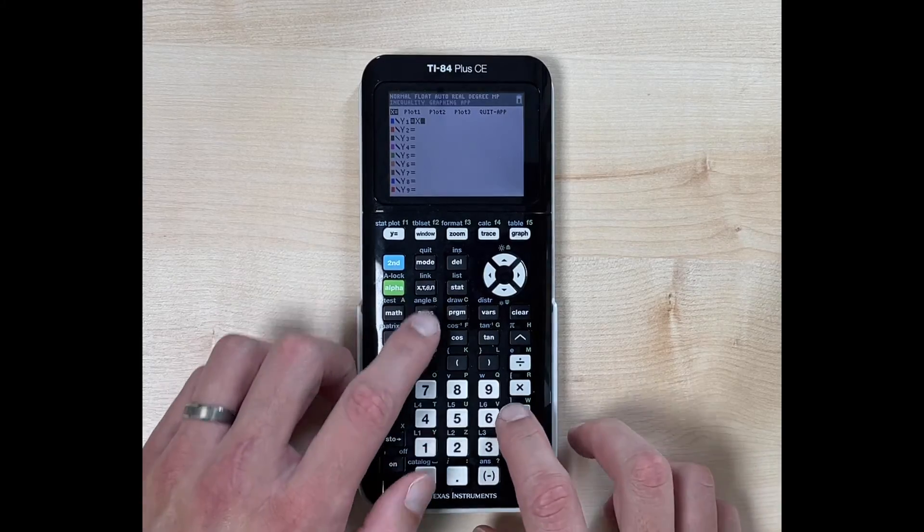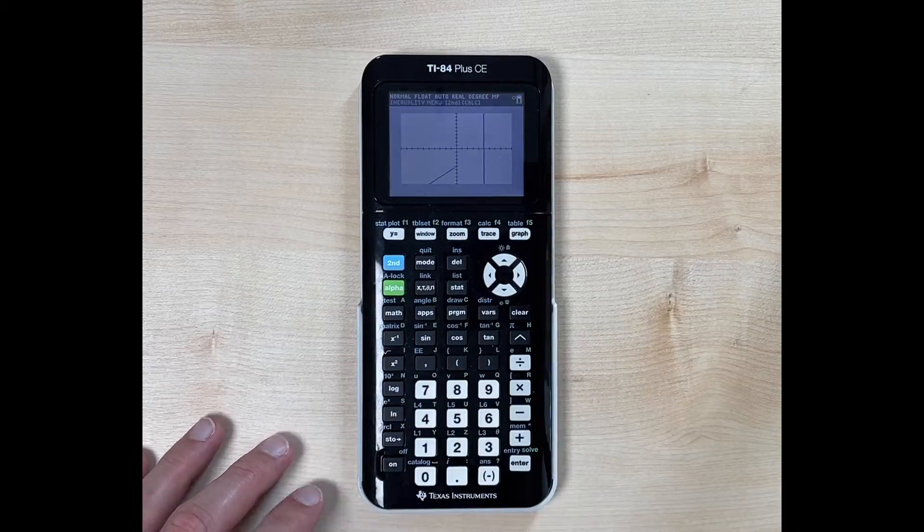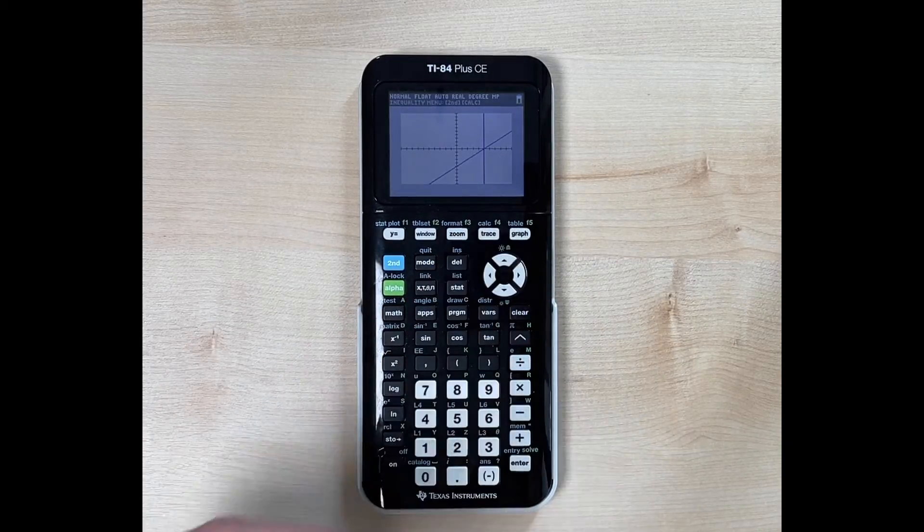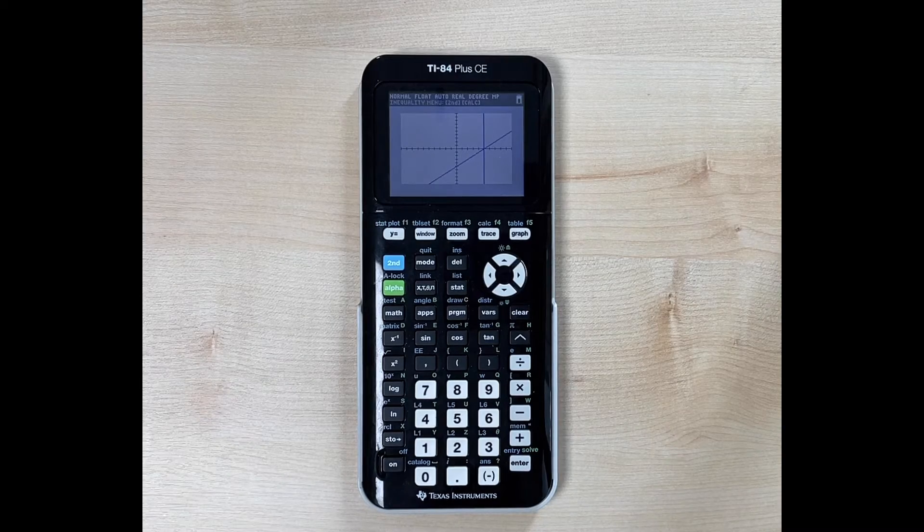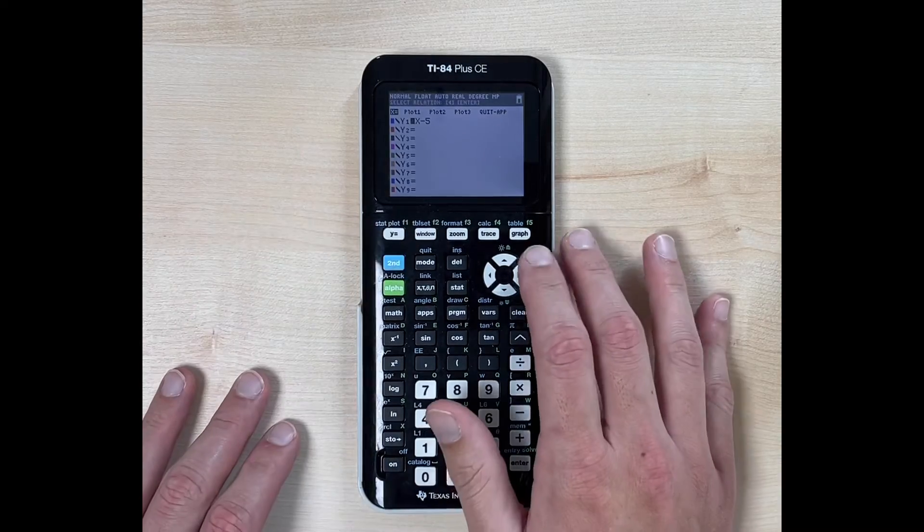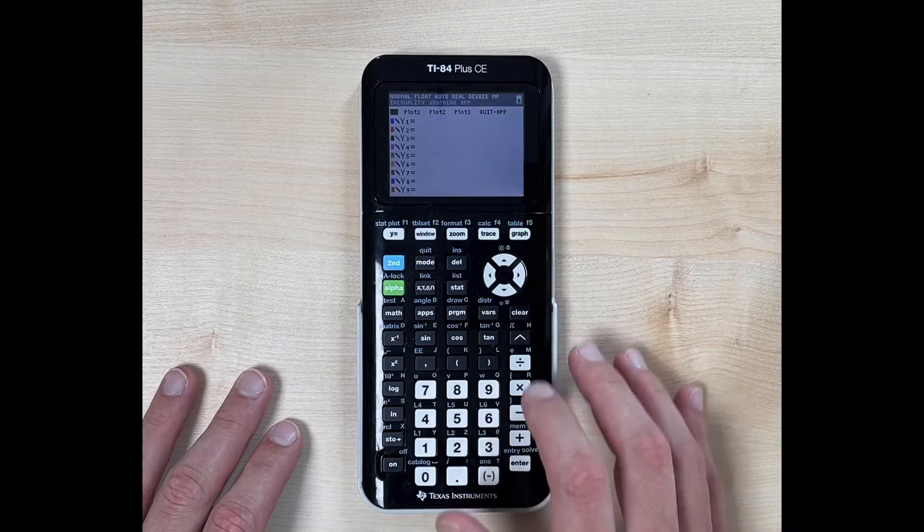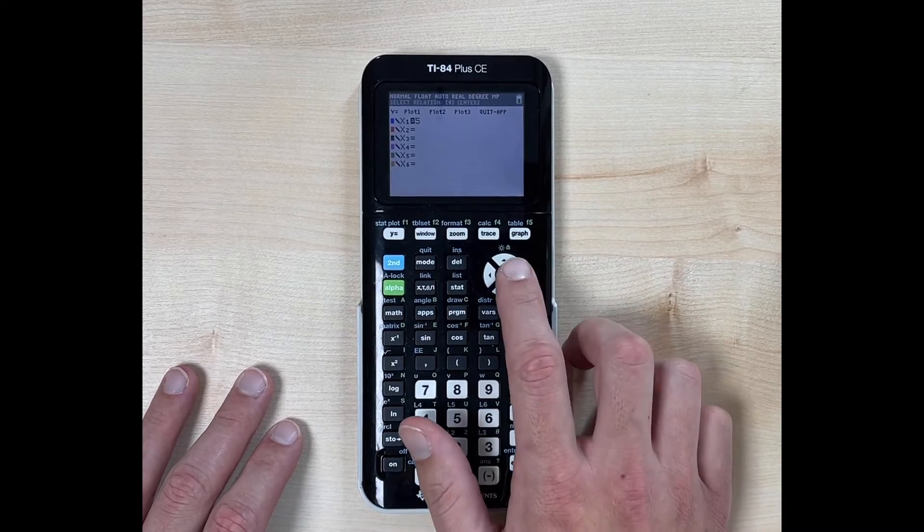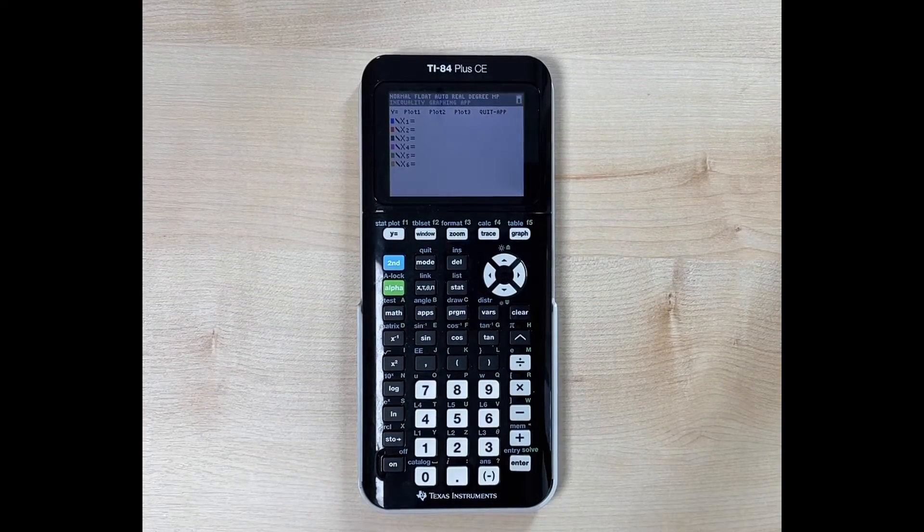let's say you're trying to graph x minus five and you hit graph and you're like, what is this other line? Well, that's because you still have that vertical line being graphed. So to clear that out, just go back up and hit enter and clear that out.